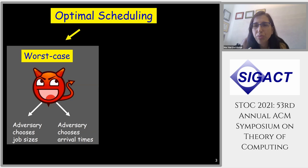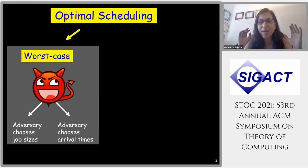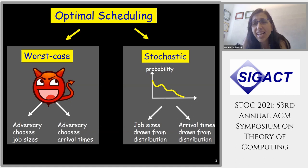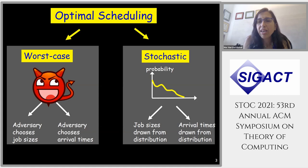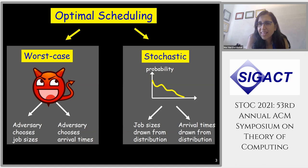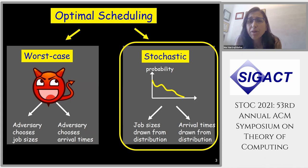Optimal scheduling comes in two different settings. The first is the adversarial setting, where a bad adversary picks job sizes and arrival times that are worst-case, and we must schedule against this. The other is the stochastic setting, where job sizes and inter-arrival times are chosen from distributions — for example, job sizes chosen IID from some general distribution. In this talk, I'll concentrate on the stochastic setting, while comparing with the worst-case setting throughout.